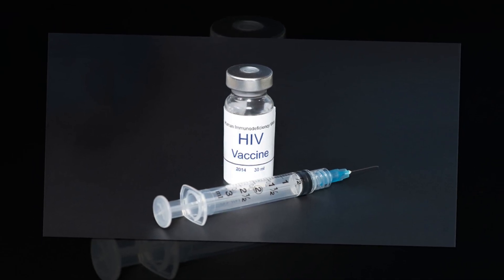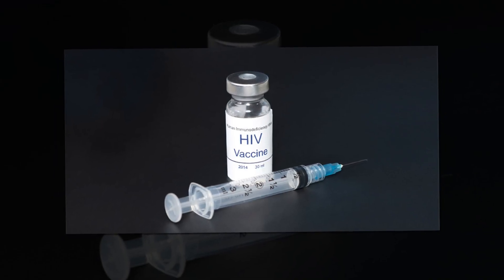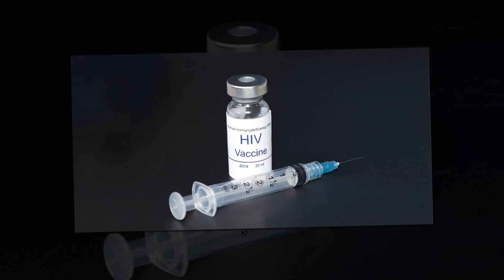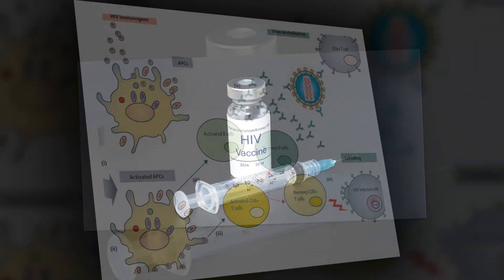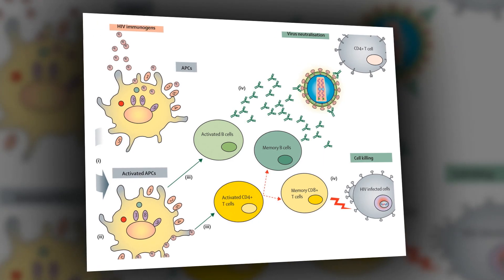Now, two new papers describe the next steps. To shepherd maturing B cells toward producing the desired bnAbs, they are exposed to a series of booster immunogens that look more and more like natural HIV envelope proteins.